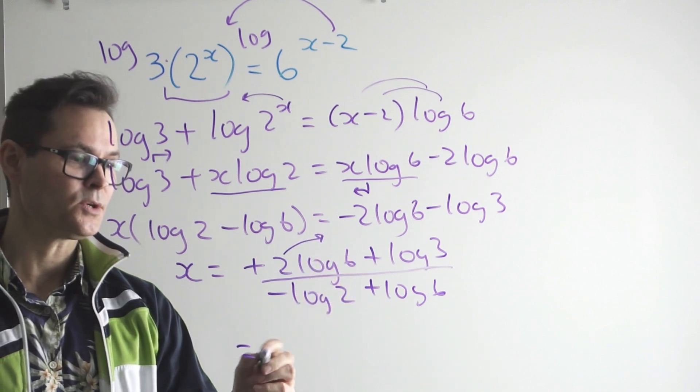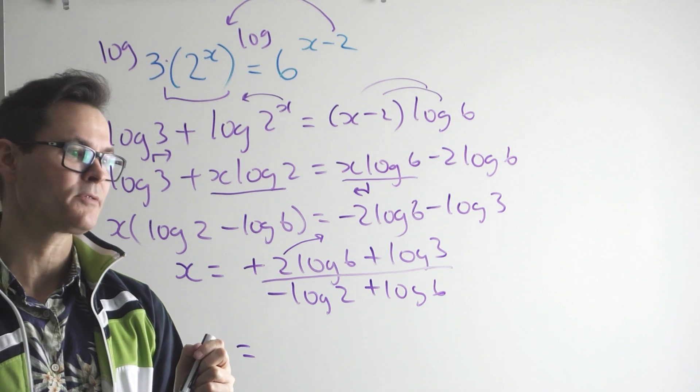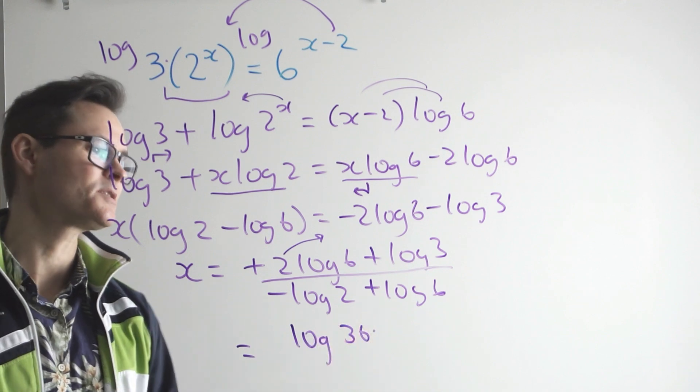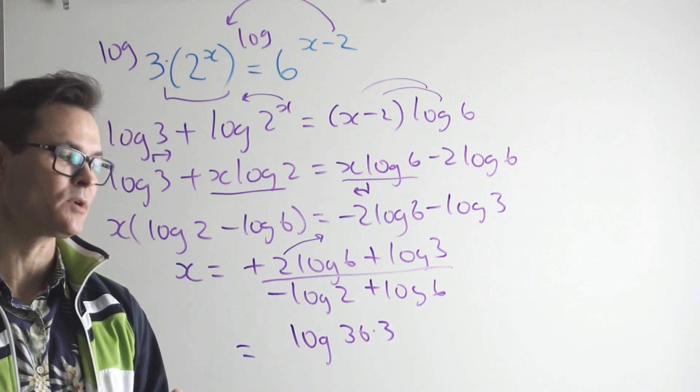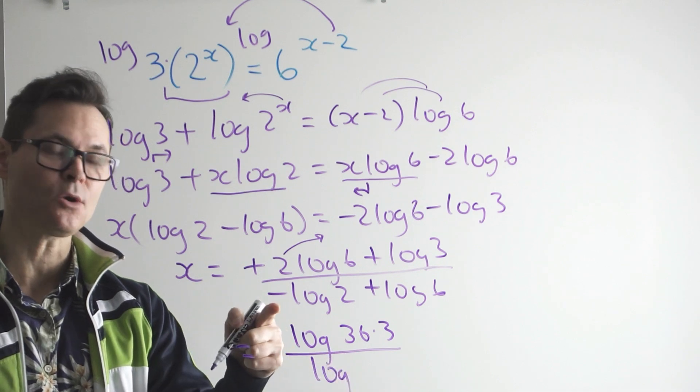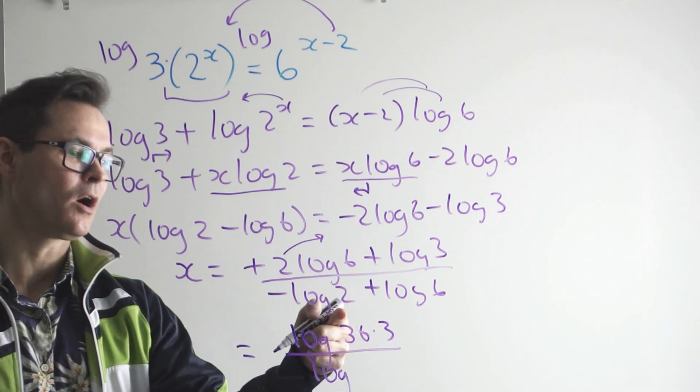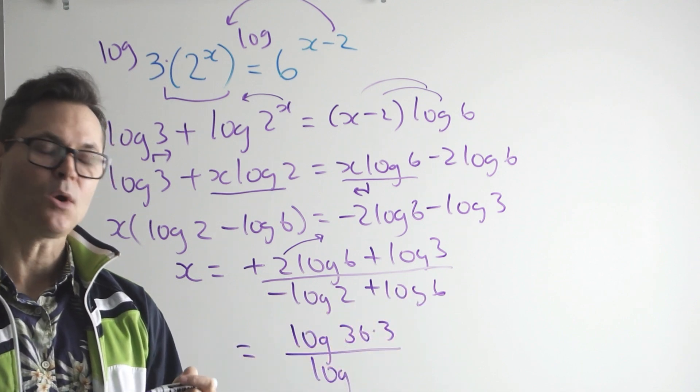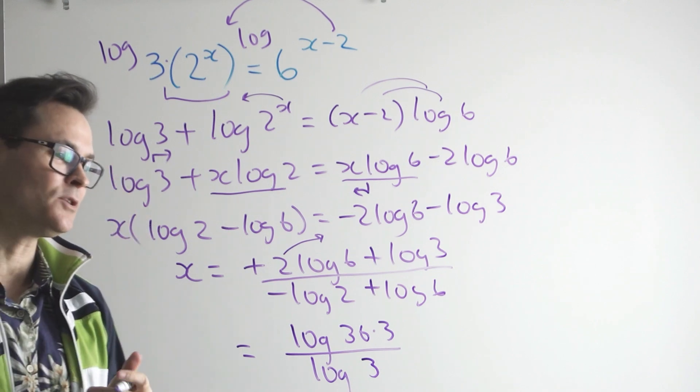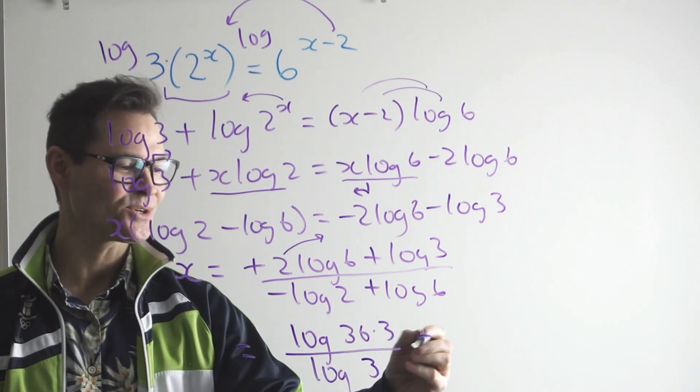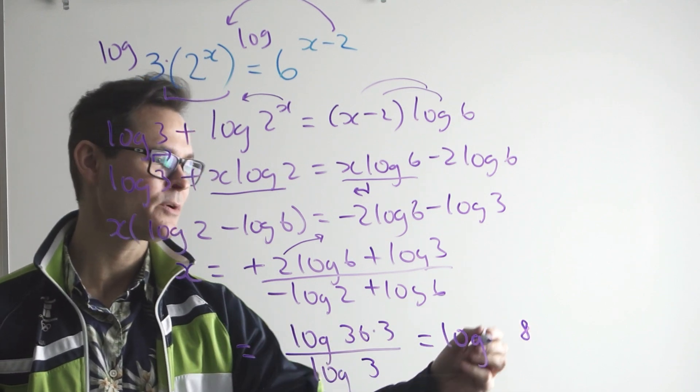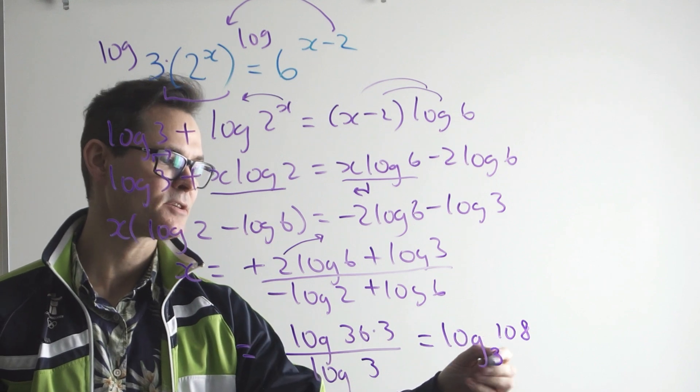So you can see here the 2 can come back up, becoming log 36. Add means times, so that's going to become the log of 36 multiplied by 3 all over the log. Now that's a takeaway, so I can think of it as the log of 6 over 2, which is the log of 3. I'm using my laws here without getting into a lot of explanation. And so here you can see that's the log, well, 36 times 3, 18 carry the 1, so 108 base 3.